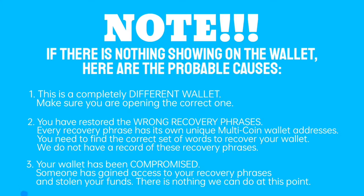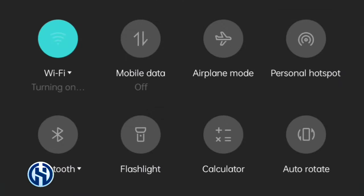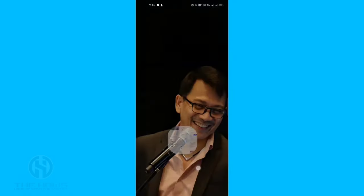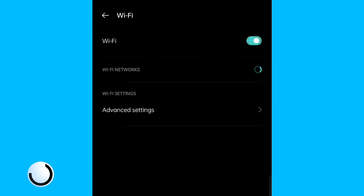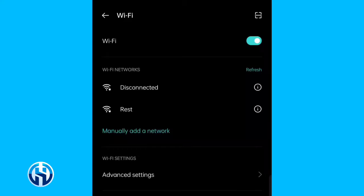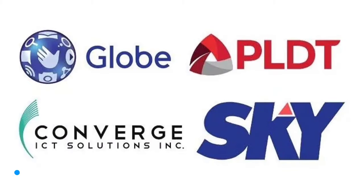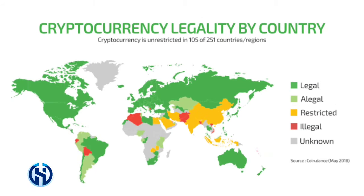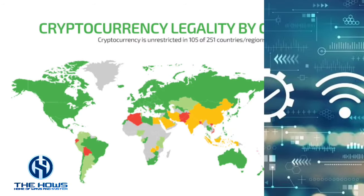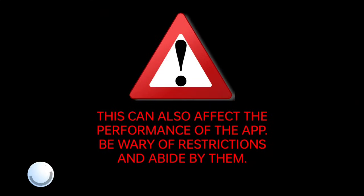Step three: check your internet connection and VPN usage. In order for the app to work, you need to be online. Try opening a browser or another app that connects to the internet. Switch off or on your mobile data, and try to reconnect to a different Wi-Fi hotspot. If there is a connection problem, you would need to check further on either your device settings or internet provider. In some cases, your connection gets blocked when you are in a country that prevents accessing crypto-related sites or apps. Some users also want additional privacy — using a VPN is one way to add this layer of security, but this can also affect the performance of the app. Be wary of restrictions and abide by them.